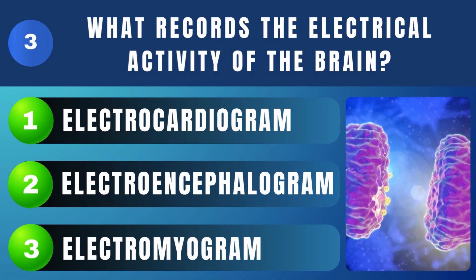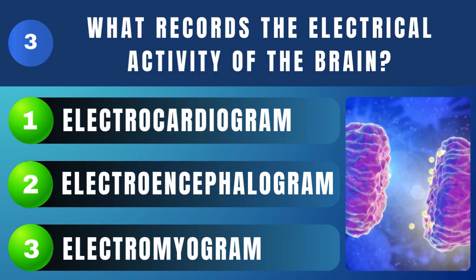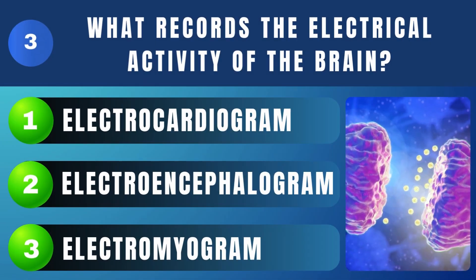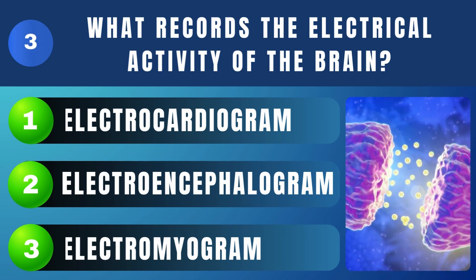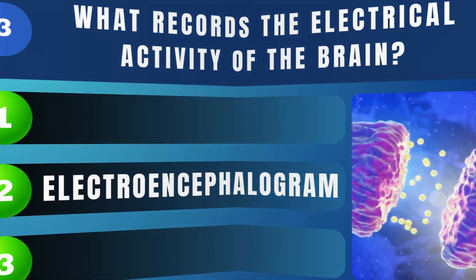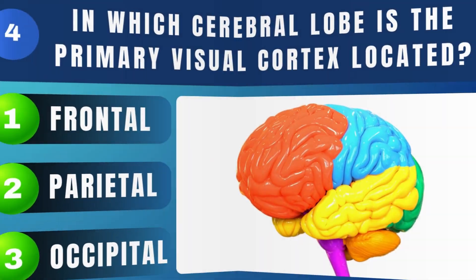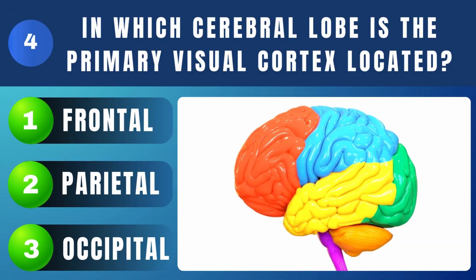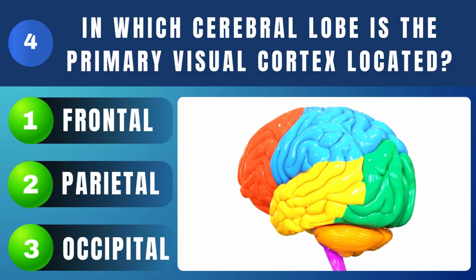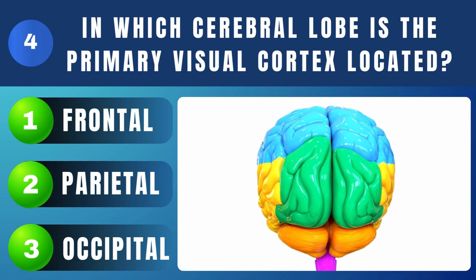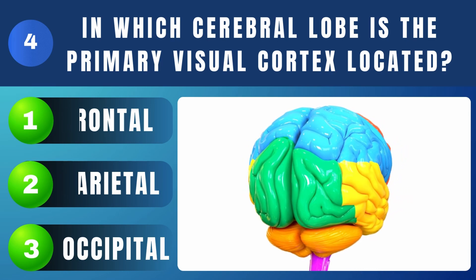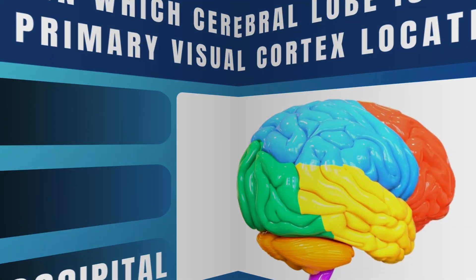What records the electrical activity of the brain? Electroencephalogram. In which cerebral lobe is the primary visual cortex located? Occipital.